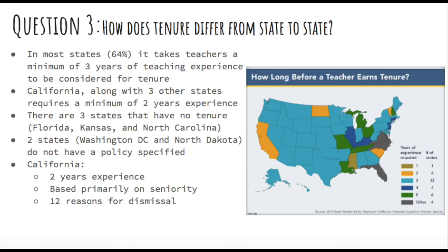Teacher tenure differs from state to state. In most states, it takes teachers a minimum of three years of teaching experience to be considered for tenure. In California, along with three other states, the requirement is a minimum of two years. There are three states that have no tenure: Florida, Kansas, and North Carolina. Two states, Washington D.C. and North Dakota, do not have a policy specified.